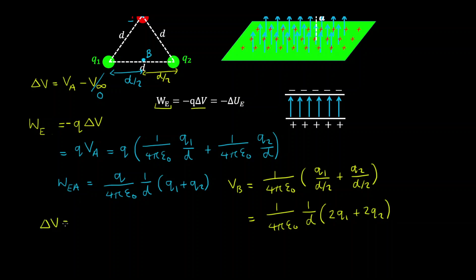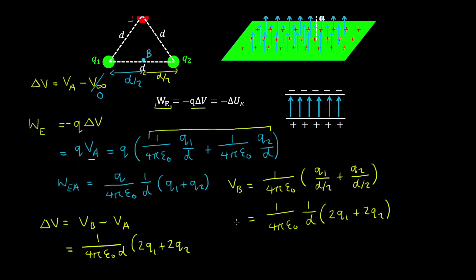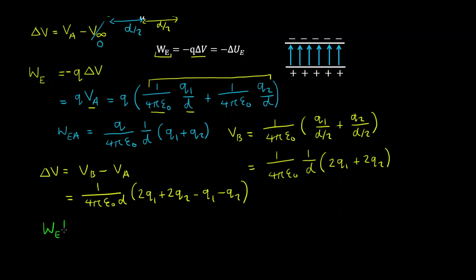Now we calculate the change in electric potential between point B and point A: that's VB which is 1 over 4π epsilon-zero times 1 over D multiplied by 2Q1 plus 2Q2, minus VA from the previous expression. Factoring out common terms we get minus Q1 minus Q2. Therefore the work done by the electric field to move the test charge from A to B is minus Q over 4π epsilon-zero D, multiplied by Q1 plus Q2.